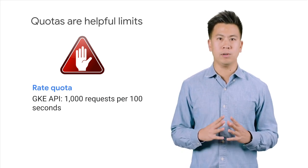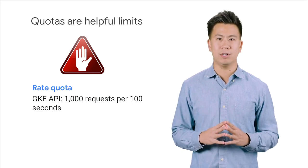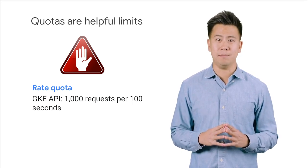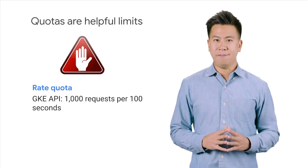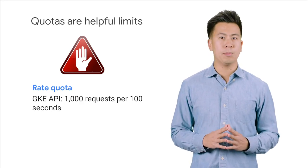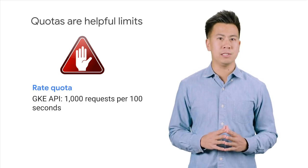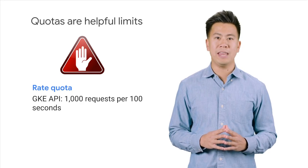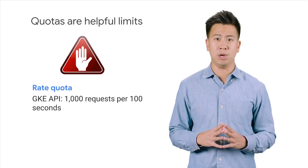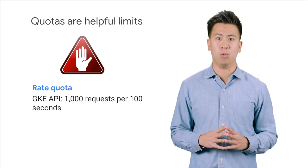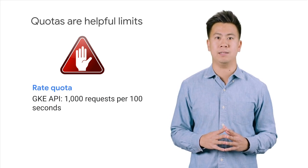Rate quotas reset after a specific time. For example, by default, the Google Kubernetes Engine service implements a quota of 1,000 calls to its API from each GCP project every 100 seconds.